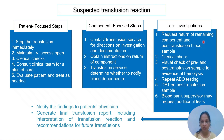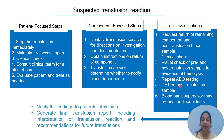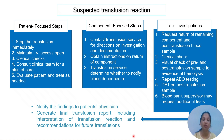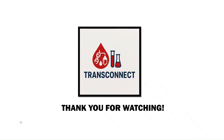At the blood bank, request the return of the remaining component and a post-transfusion blood sample from the patient. Perform a clerical check, visual inspection of pre- and post-transfusion patient samples and the bag, and check for evidence of hemolysis. Repeat ABO testing of the patient and blood bag, perform a direct antiglobulin test on the post-transfusion sample. The blood bank doctor or supervisor can request additional tests depending on the clinical scenario. Finally, notify findings to the primary clinical team and generate a transfusion reaction report including interpretation and recommendations for future transfusions.